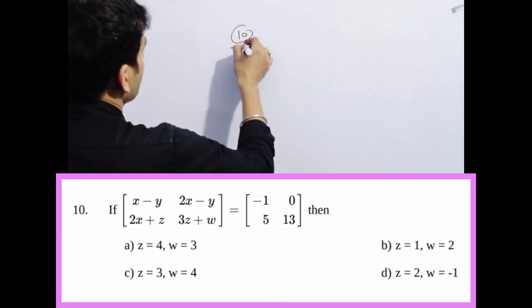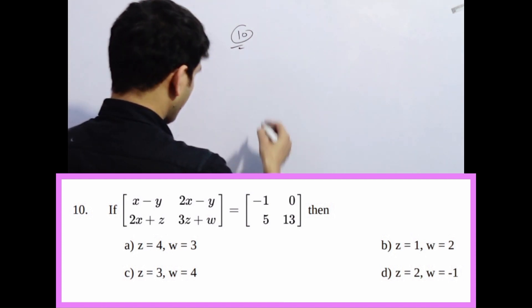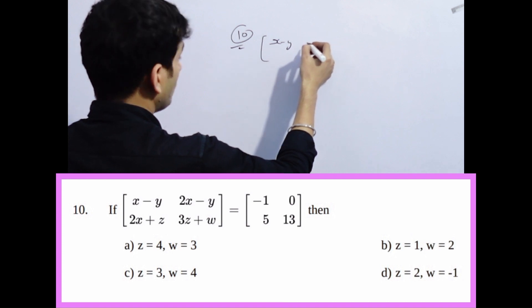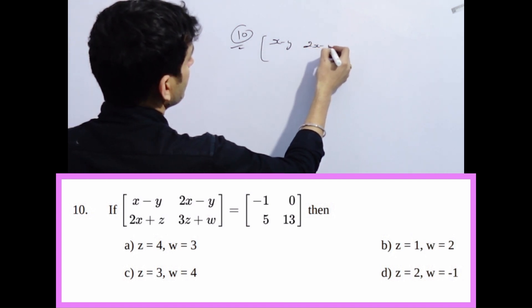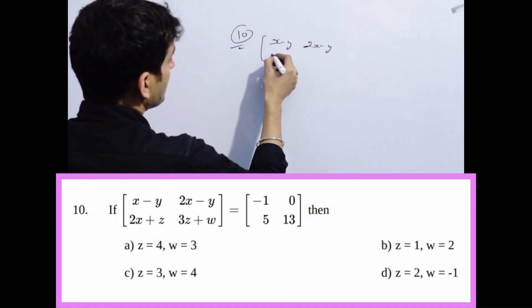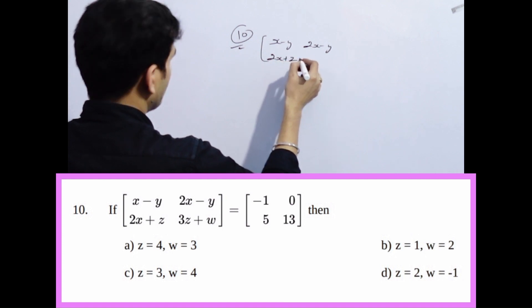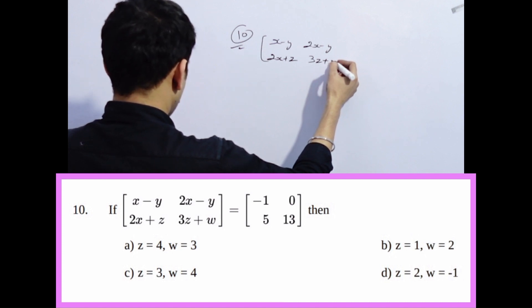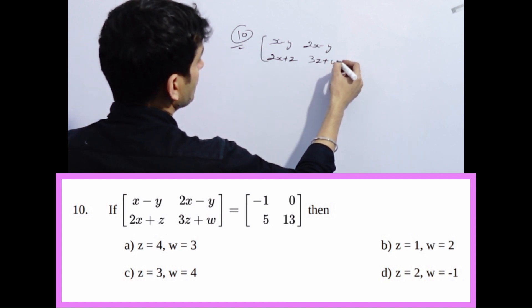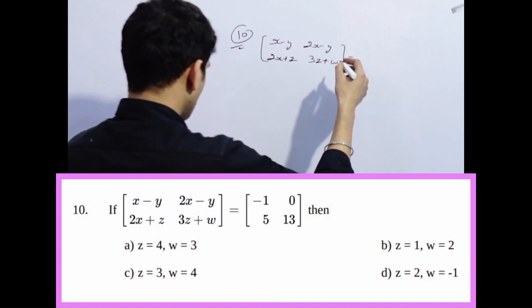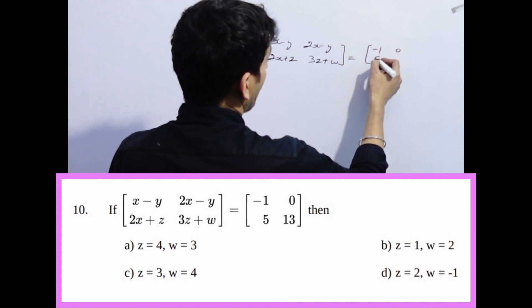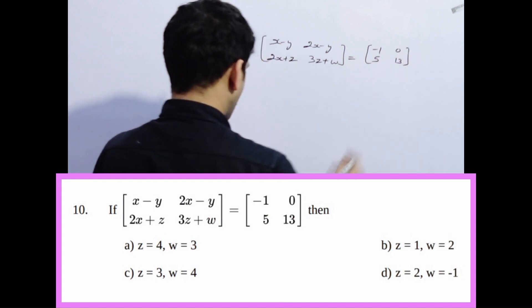Question number 10. If x minus y, 2x minus y, 2x plus z, 3z plus w is equal to minus 1, 0, 5, 13.